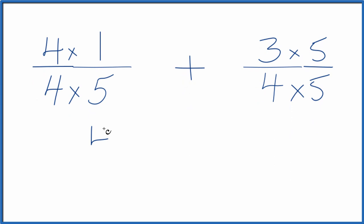Four times one is four. Four times five is 20. Over here, three times five is 15. Four times five is 20.